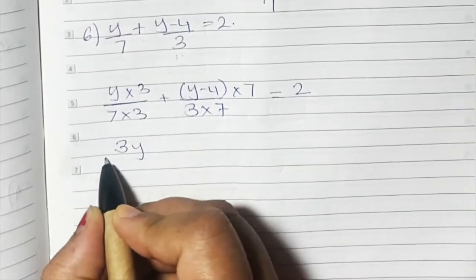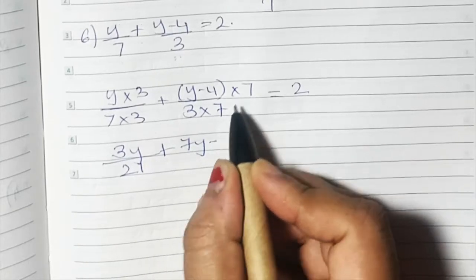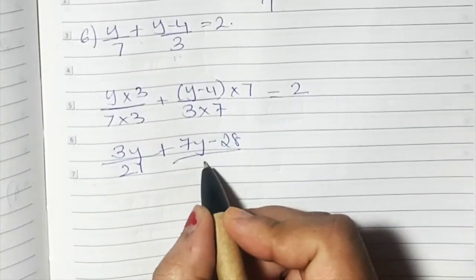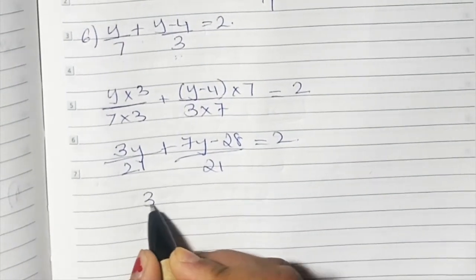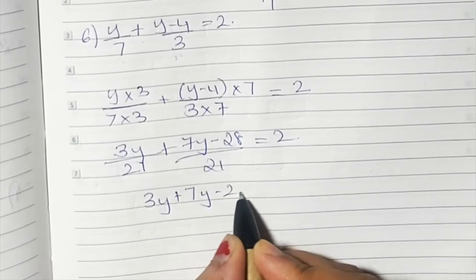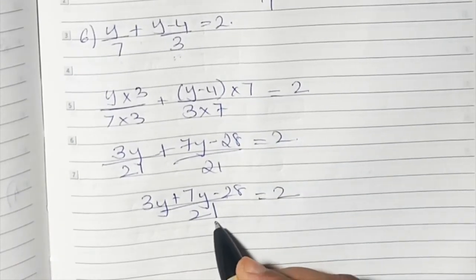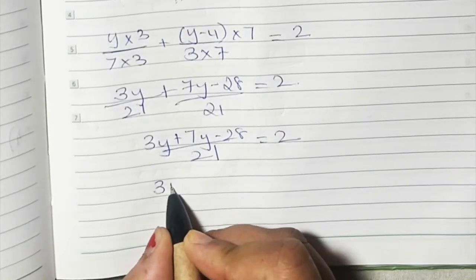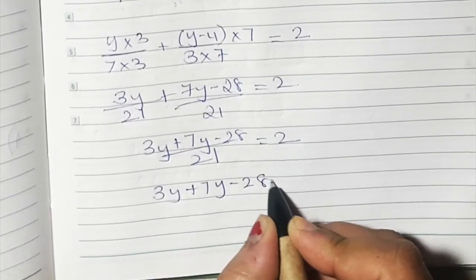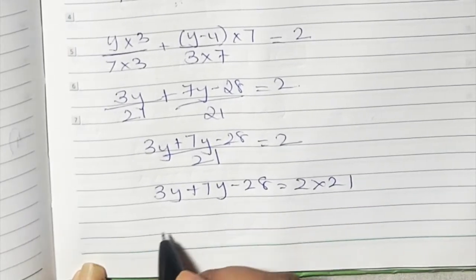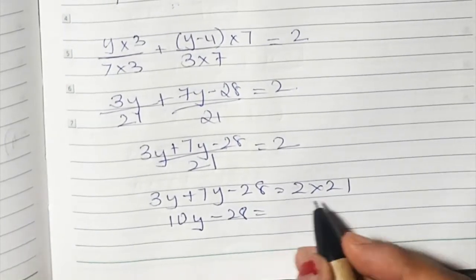y multiplied by 3 is 3y. 7 into y is 7y, and 7 into 4 is 28. The denominator is 21. So we have 3y plus 7y minus 28 upon 21 equals 2. This 21 is divided, so it crosses over and becomes multiplied: 2 into 21 is 42.